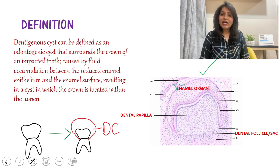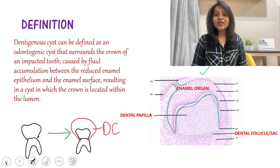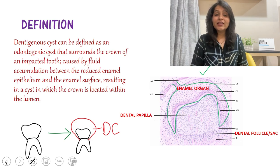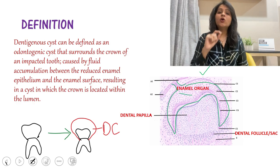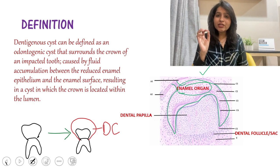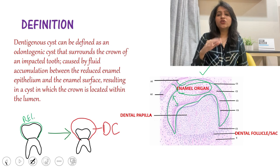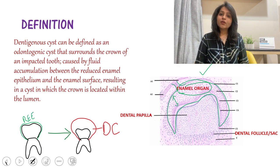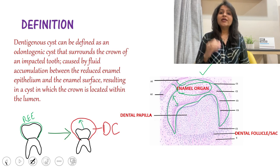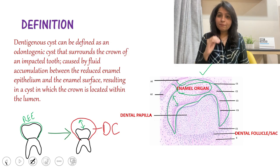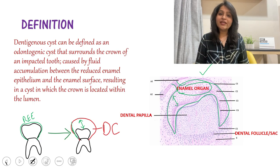This dental lamina forms the enamel organ, which takes up various shapes — first there is the bud stage, then the cap stage, and then the bell stage. When the enamel of the tooth is completely formed, the enamel organ gets reduced or shrunken into the reduced enamel epithelium. It acts as a protective covering around the tooth and consists of the outer and inner enamel epithelial cells. The dentigerous cyst is formed when there is fluid accumulation between the enamel surface of the impacted tooth and the reduced enamel epithelium, leading to the expansion of the dental follicle.